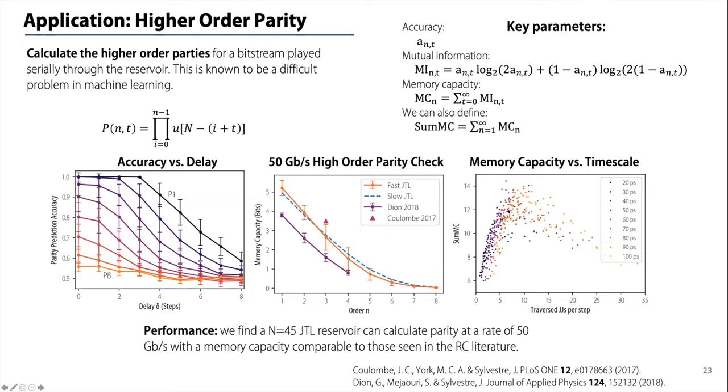One interesting point that we discovered, given how well known it is that the reservoir timescale has to match the input timescale of the data, as we change the physical parameters of the system and the sample and hold time for the inputs, we find there's a reasonably clear maximum of the sum of the memory capacities, something around nine or 10 Josephson junctions traversed per time step. That just reinforces that no matter which parameters you're tweaking, you need to be very cognizant of how that impacts the timescale of your system.